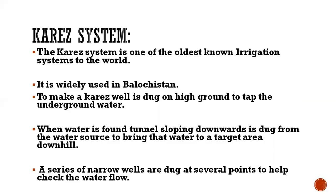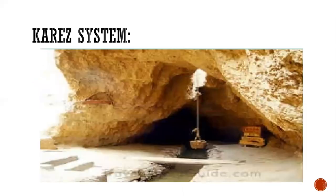The karez system is another important method of irrigation and is one of the oldest known irrigation systems in the world. It is widely used in Balochistan. A well is dug on high ground to tap underground water, then a tunnel sloping downwards is dug from the water source to bring water to a target area downhill. A series of narrow wells are dug at several points to help check the water flow.